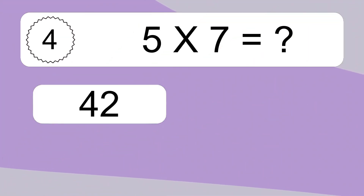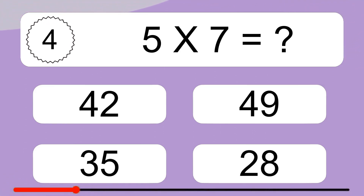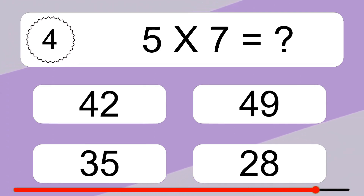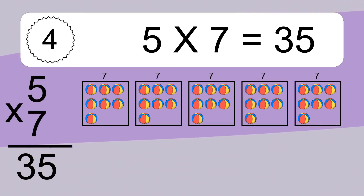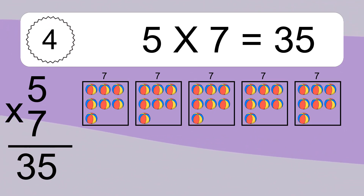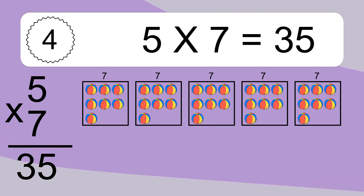5 times 7 equals what? We have 5 boxes, and each box has 7 colorful balls inside. If you count all the balls in all the boxes together, you will have 5 times 7 balls. This equals 35 balls.